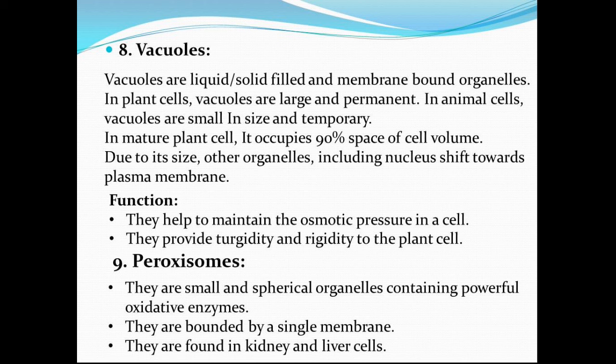The cell sap exerts an outward turgor pressure, so it helps to maintain the osmotic pressure in a cell. It also helps in the storage of water, minerals, and toxic metabolites. Vacuoles also provide turgidity and rigidity to the plant cell.